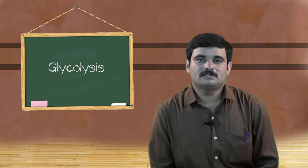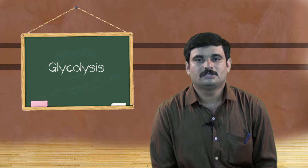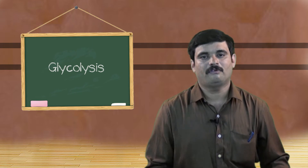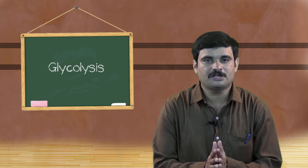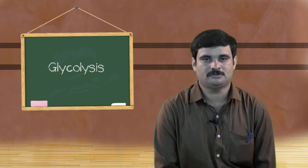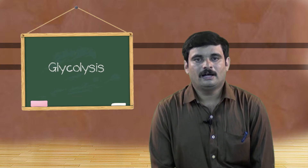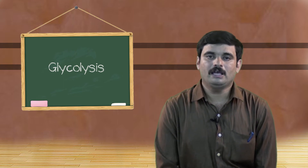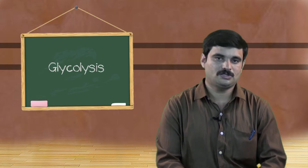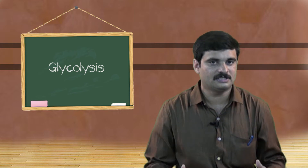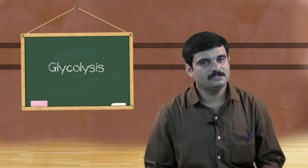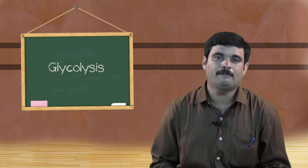Glycolysis is a universal process which takes place in all kinds of organisms, irrespective of whether they are prokaryotes or eukaryotes. It is also called the EMP pathway, to honor the scientists who elucidated this process — Embden, Meyerhof, and Parnas.